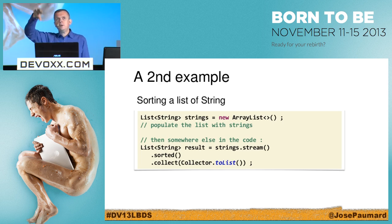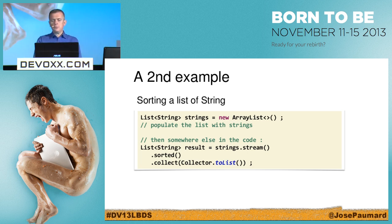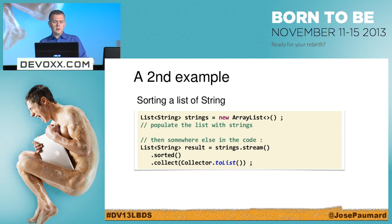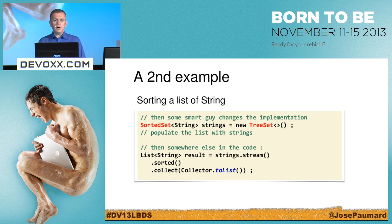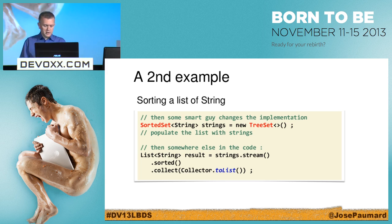So if I have a list of strings in my code and I build a stream on it, call sorted(), and collect everything into a list — this will give me a sorted list. But if someone changes the implementation and uses a SortedSet instead of the list, I don't need to change my code. The sorted call has already been made; the implementation will realize that and the sorted() call on the stream will be a no-op. I love that.